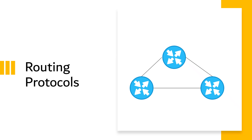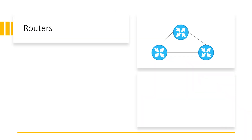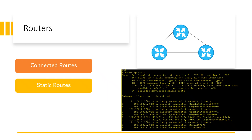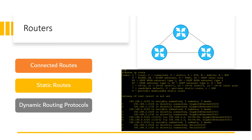Hello everyone. In today's session of the CCNA series, I will discuss routing protocols. Routers add IP routes to their routing table using three different methods: connected routes, static routes, and by using dynamic routing protocols.